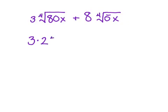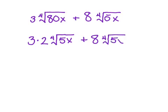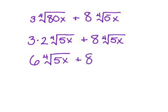3 times 2 times the fourth root of 5x. And that will be added to the other 8 times the fourth root of 5x. Just to make life a little easier here, we're going to go ahead and multiply this 3 times 2. Rewriting my first one to be 6 times the fourth root of 5x plus 8 times the fourth root of 5x.